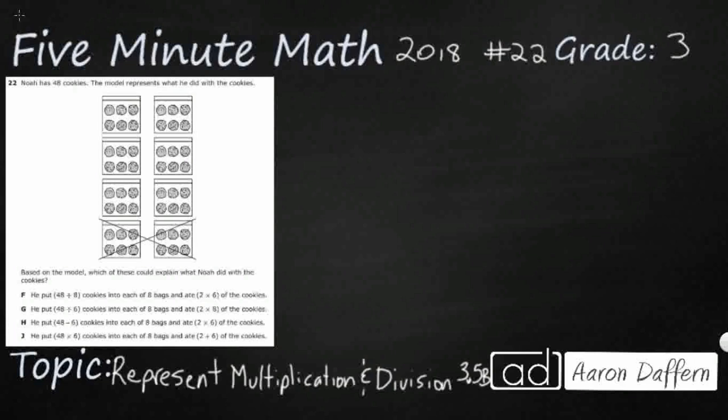So we have Noah and he's got 48 cookies. We've got a picture of these 48 cookies and you can see there's an X down at the bottom. What we're trying to do is represent some multiplication and division steps, but with a picture. Let's see if we can figure out what we have working here.